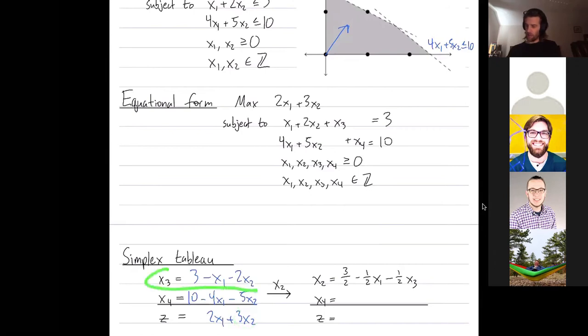Since both of these constants are positive, I could pivot over x2 or x1. Let's just choose to pivot over x2. So I'm increasing x2. And then my bound here is when x2 becomes 3 halves. And my bound here is when x2 becomes 2. And 3 halves is smaller than 2. So x2 is going to become my new basis vector. And x3 is going to get replaced.